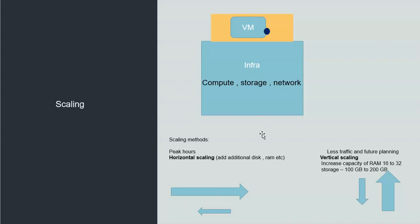When users are using our instance and more users are coming in, we want to scale the performance of that virtual machine. There are two ways to increase performance: horizontal and vertical. Horizontal scaling means adding more compute or storage onto the machine while it is running, to reduce the load on the instance. This is called horizontal scaling.